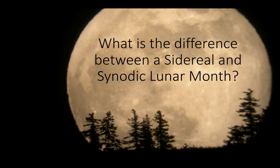Hello earth science students, this is your lesson on the moon. What is the difference between a sidereal and a synodic lunar month? The months of the year range in days from 28 to 31 days, and the length of calendar months are based on many different factors, many of them having nothing to do with the science of moon phases. The sidereal and synodic lunar months have scientific explanations for their different lengths.